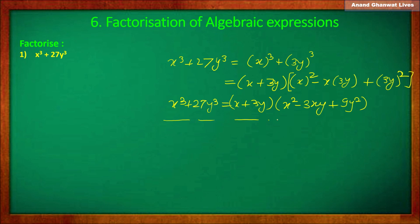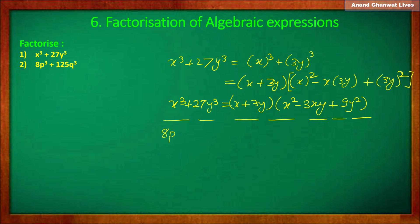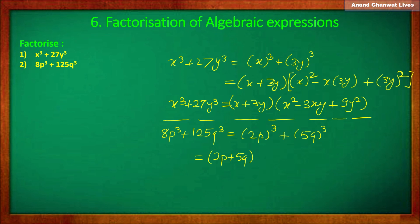Now the next example is 8p cube plus 125q cube. So 8p cube is the cube of 2p and 125q cube is the cube of 5q. So let us factorize this expression in the form of a cube plus b cube. The first bracket is (a plus b), that is (2p plus 5q), and the second bracket is (a squared minus ab plus b squared).